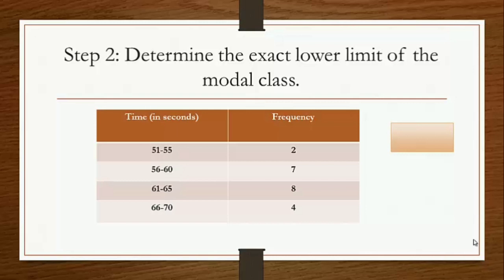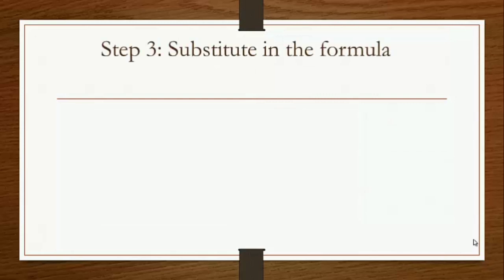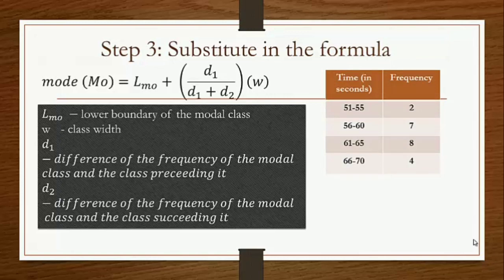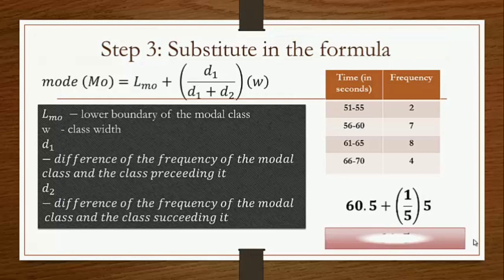Step 2: determine the exact lower limit of the modal class by subtracting 0.5 from the lower boundary. That is, 61 minus 0.5 equals 60.5. Step 3: substitute in the given formula. By substituting, our mode equals 61.5, which falls within our modal class 61 to 65.